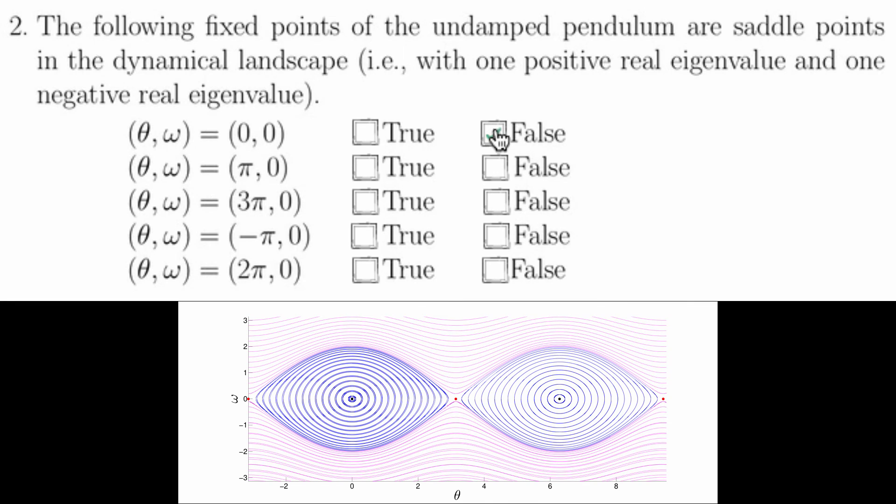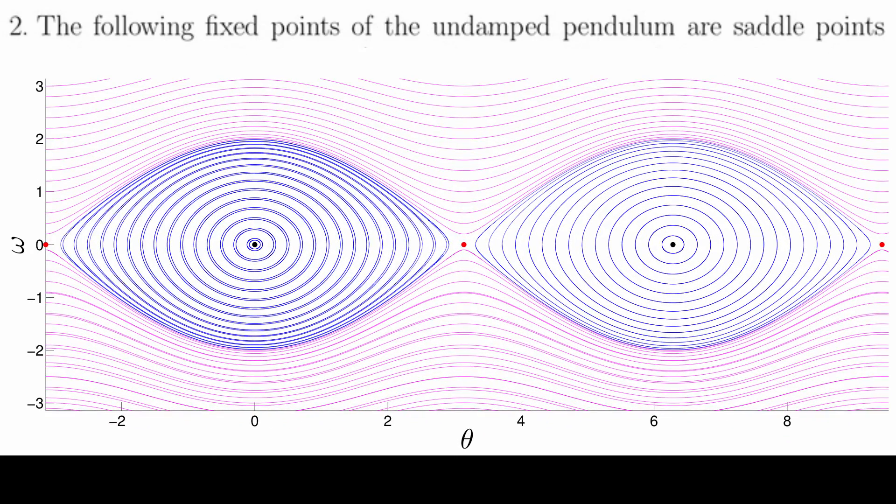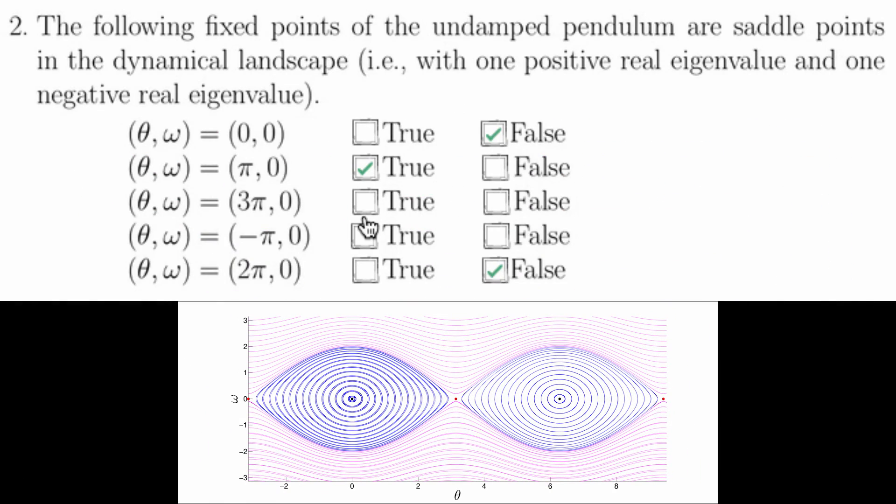So this one is not a saddle point, it's elliptic, and this one is not a saddle point, it's also elliptic. However, odd multiples of pi in the theta coordinate are saddle points. So this is a saddle point, this is, and this is as well.